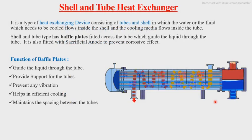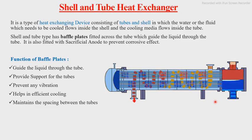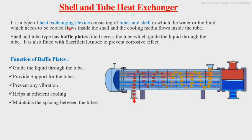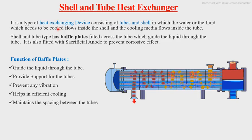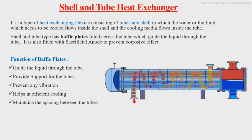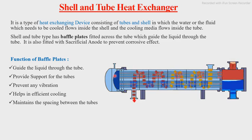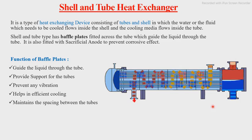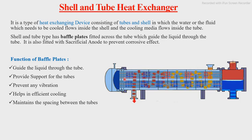The shell and tube heat exchanger is a type of heat exchanging device consisting of tubes and a shell, in which the water or fluid which needs to be cooled flows inside the shell, and the cooling media flows inside the tubes. The coolant enters cold, absorbs heat from the shell-side fluid as it travels through the tubes, and exits hot. The liquid being cooled enters from one side and exits the heat exchanger from the other side.